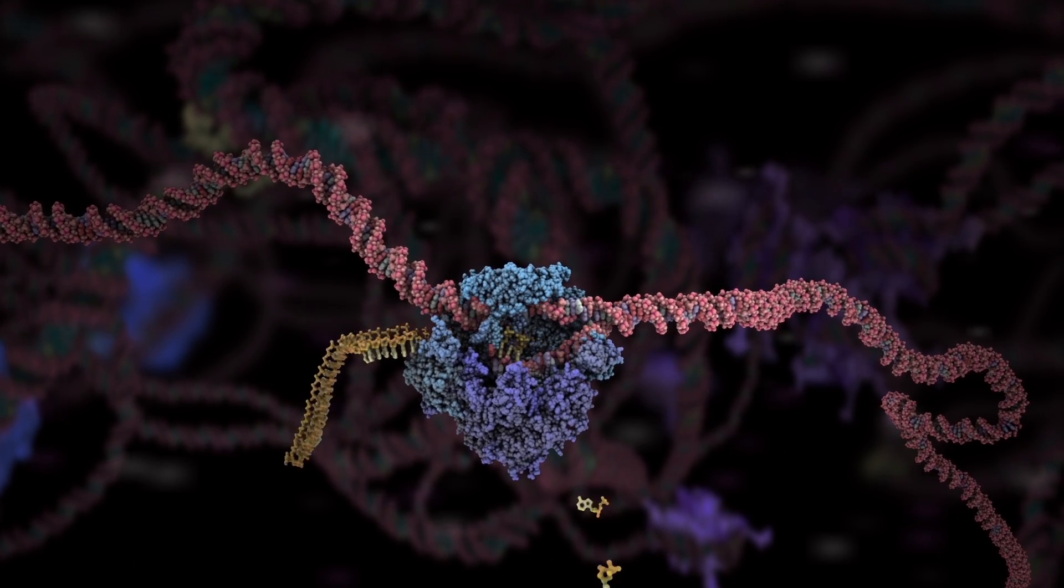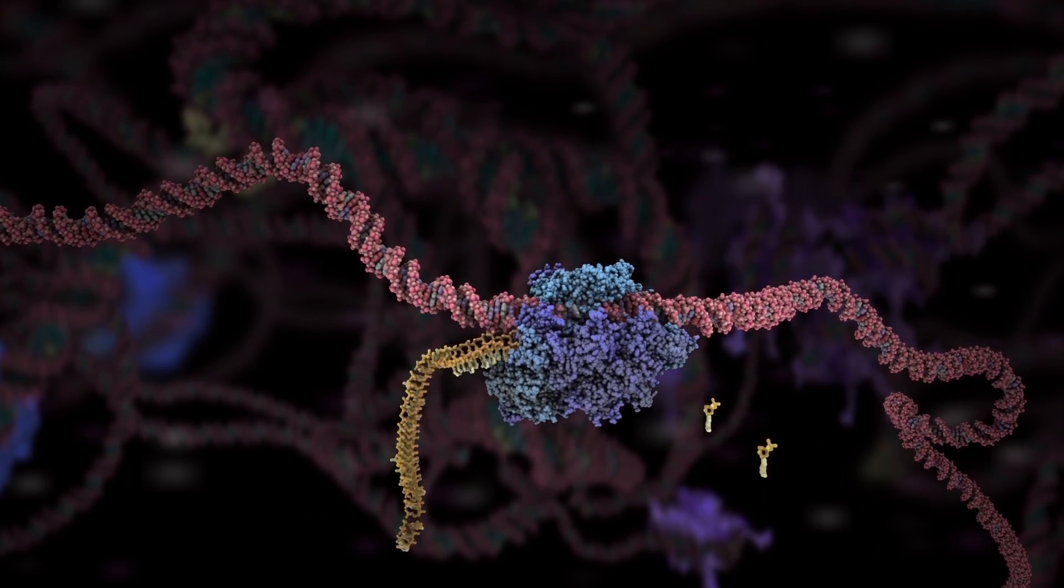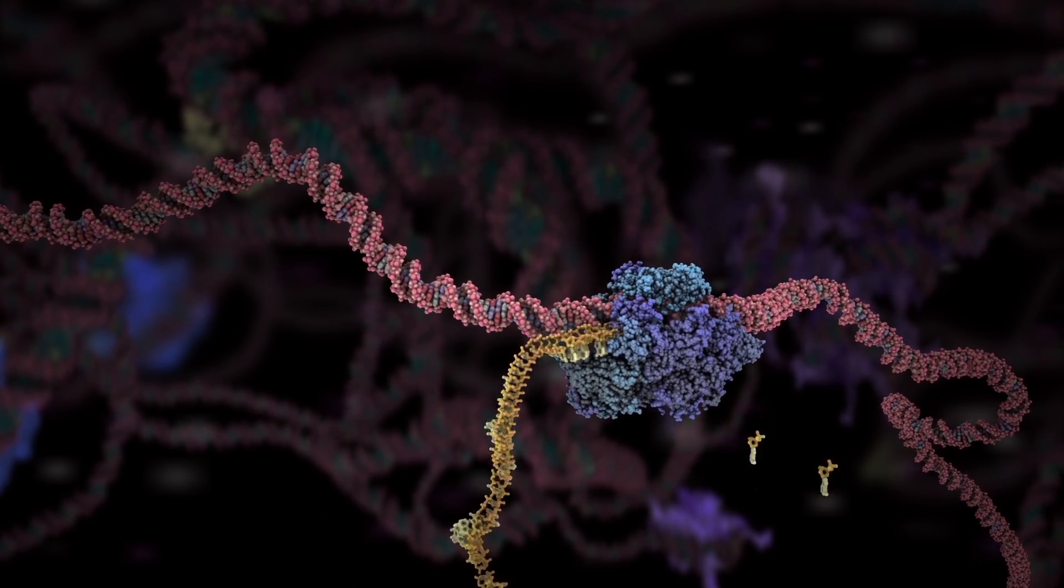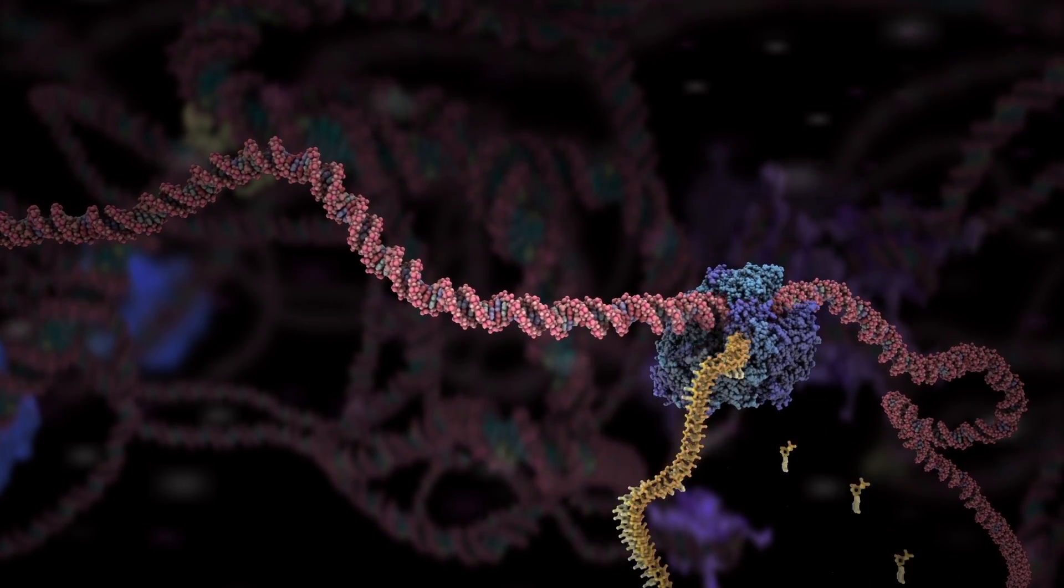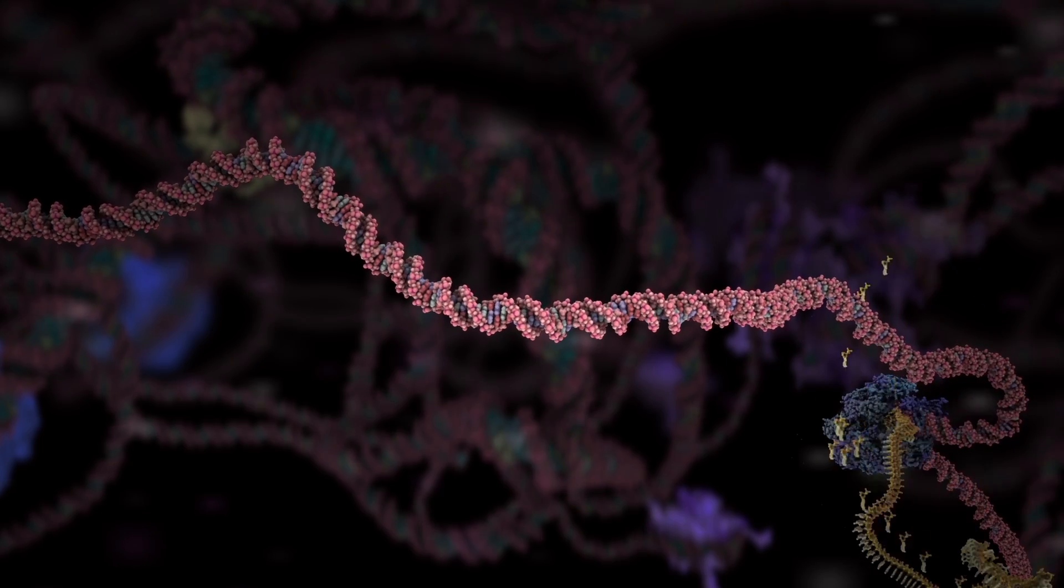But our genome encodes hundreds of thousands of different RNA molecules, and any one cell has access to only a subset of this genome library. So each cell has a unique RNA pattern representing our genome in action.